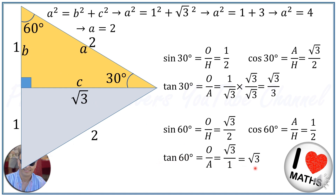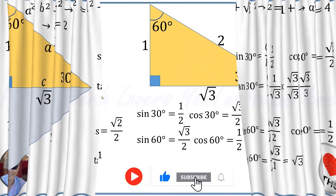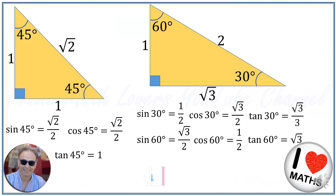With these two triangles you will be equipped to effortlessly recall the exact values of sine, cosine and tangent of 30, 45 and 60 degrees. Visual aids like these triangles not only simplify the memorization process but also enhance understanding by providing geometric context. So next time you're faced with a trigonometric problem, just think of these two triangles and you'll have the solution at your fingertips.